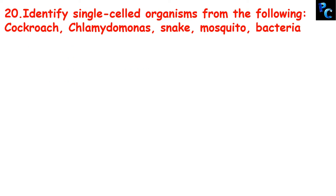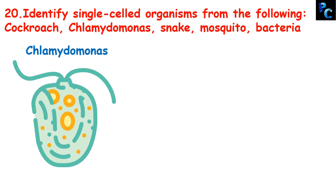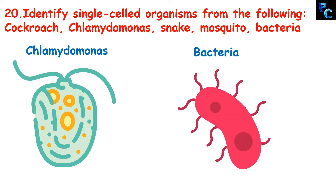Identify single-celled organisms from the following: cockroach, Chlamydomonas, snake, mosquito, bacteria. Cockroach is a multicellular organism. Chlamydomonas is a unicellular organism. Bacteria is also a unicellular organism. So the single-celled organisms are Chlamydomonas and bacteria.